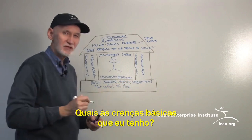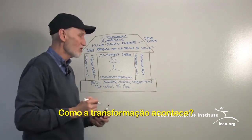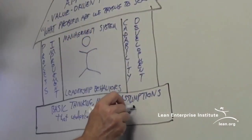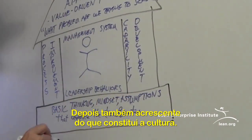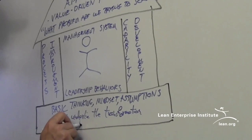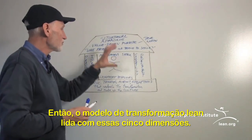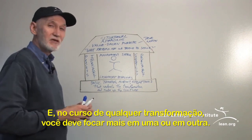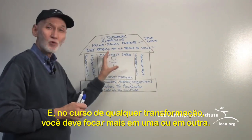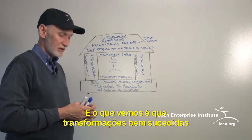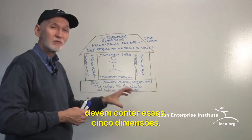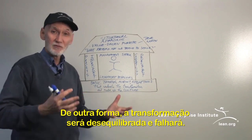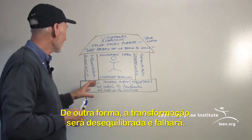The basic beliefs about how transformation works — about how businesses and the world work — underlie the transformation and also constitute the culture. The lean transformation model deals with these five dimensions. In the course of any transformation you may focus more on one or another, but what we've seen in successful transformations is that ultimately you must deal with all five dimensions — otherwise the transformation will be out of balance and it will fail.